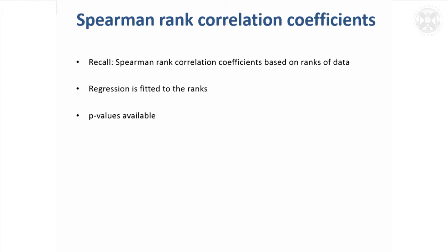Spearman rank correlation coefficients are based on the ranks of the data. In regression, the analysis is fitted to the ranks rather than the exact values, which allows us to get P values to test whether the Spearman rank correlation coefficient is significant — just as with the ordinary correlation coefficient. Whether based on ranks for non-parametric data or actual data for normally distributed data, we can still get a P value to test whether there is a significant correlation between two measurements.